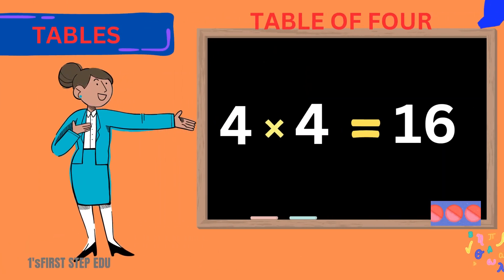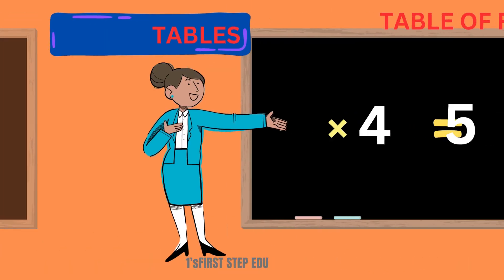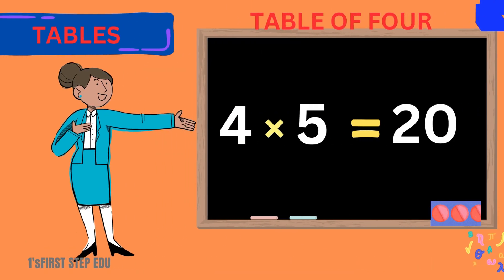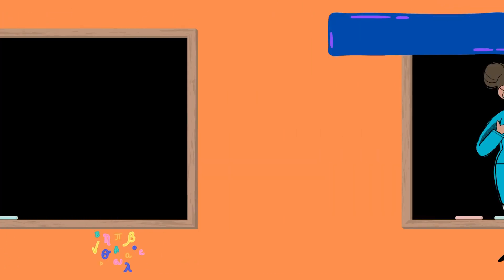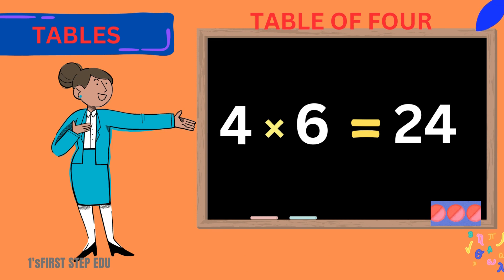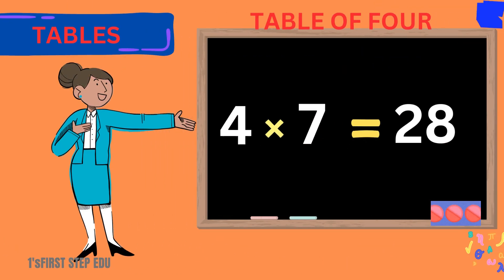4 ones are 4. 4 ones are 4. 4 twos are 8. 4 twos are 8. 4 threes are 12. 4 threes are 12.